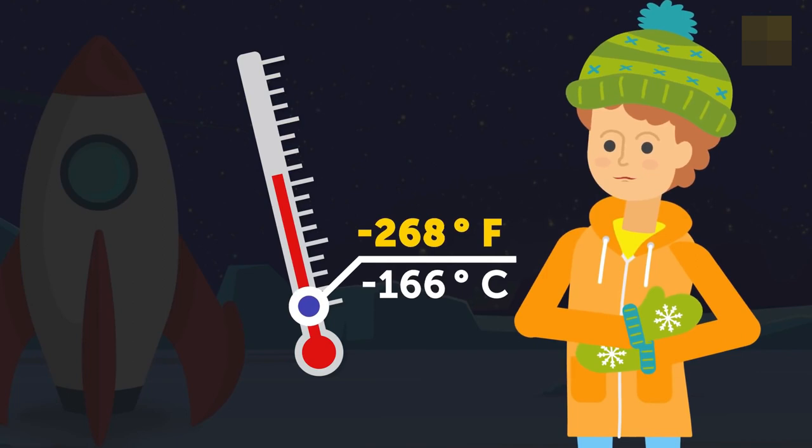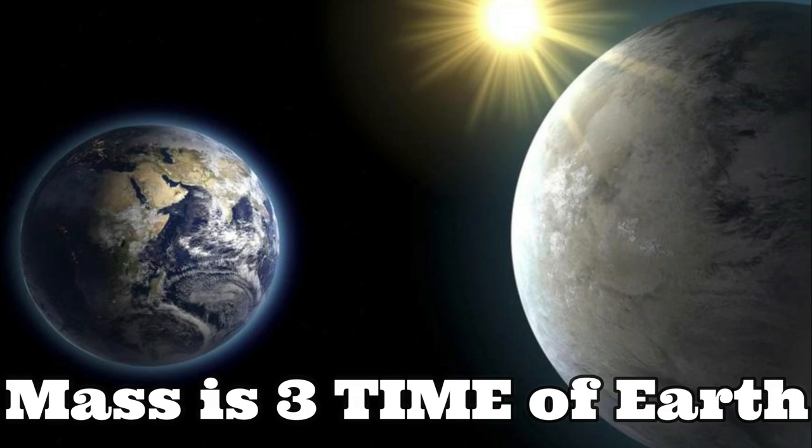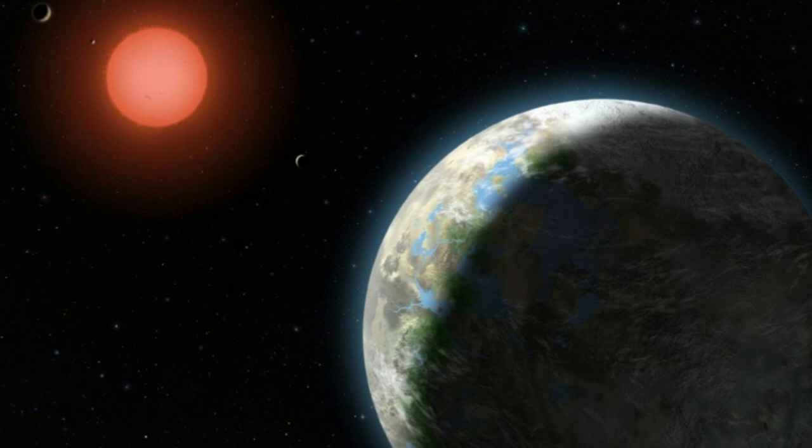astronomers from Villanova University explained that, although this world is likely cold about minus 170 degrees Celsius or minus 275 Fahrenheit, it could still have the potential to harbor primitive life. The mass of Barnard B is just over three times that of Earth.